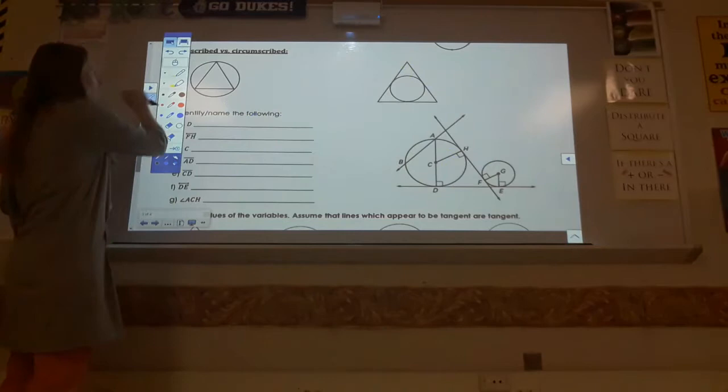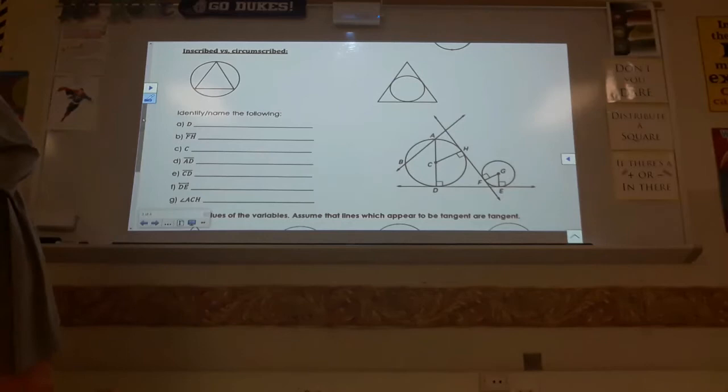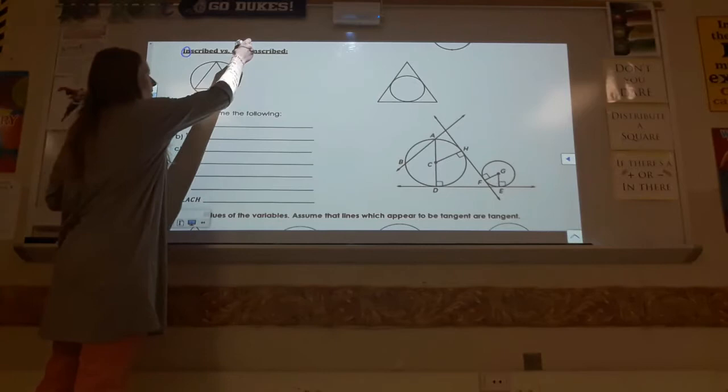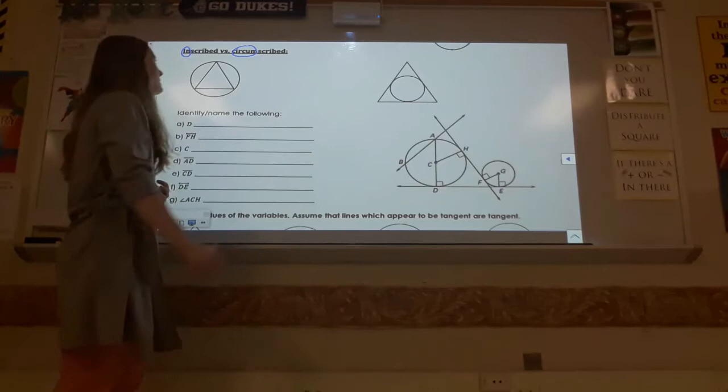I'm going to do a little bit more vocab first, and then we'll get to the solving. So there are two new vocabulary words. We're not using too much today, but I want to introduce them now because we will be using them in future lessons. So we have the idea of inscribed versus circumscribed. Scribed means like to draw or write, so the little bits before the scribed tell you how it's been written or drawn.